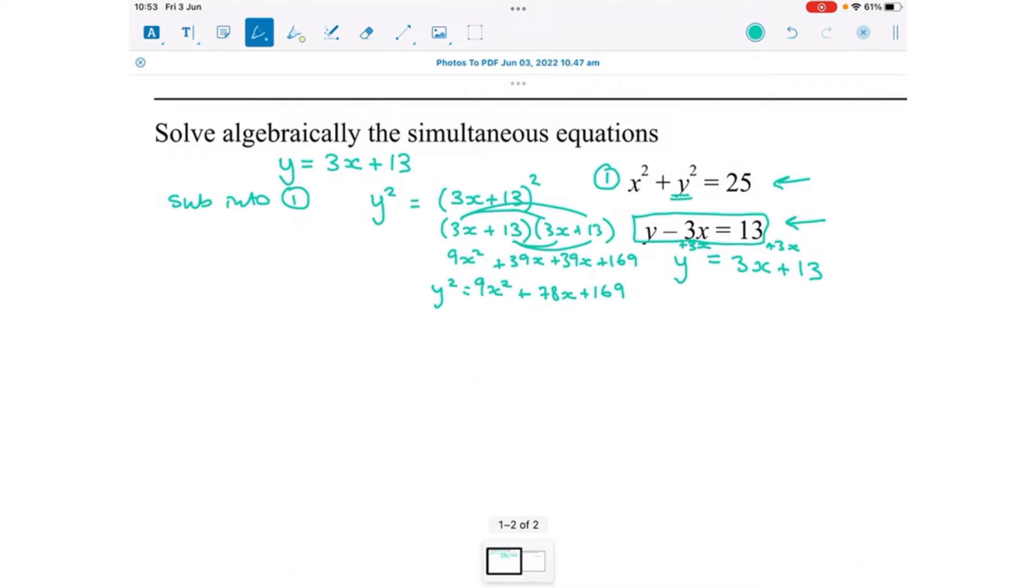So now that we know that that's y squared we can substitute it in to this equation. So instead of writing y squared we're going to write this because we know that they're the same thing. So now I'm going to write x squared add 9x squared add 78x add 169 equals 25. So all I've done is I've put that instead of y squared because we know that that is equal to y squared. And now we've got no y's so that's going to enable us to solve it.